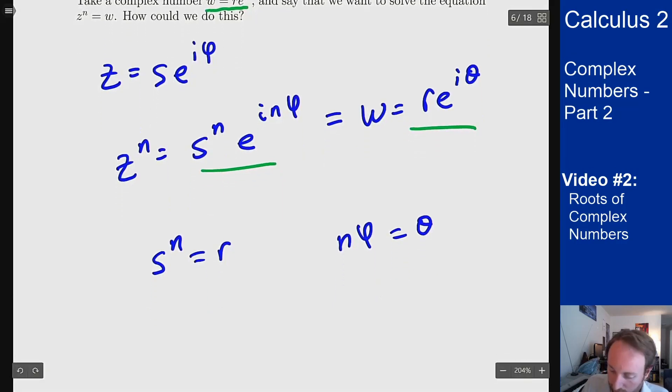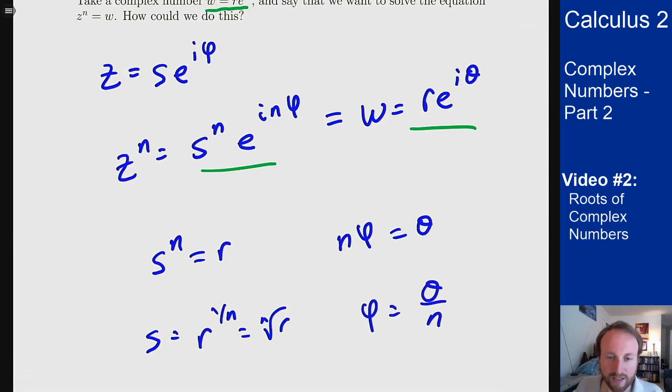These are both positive real numbers over here so I can take an nth root and over here I just divide both sides by n. So I must have that s is r to the 1 over n or the nth root of r and I must have that phi is theta over n. So what do I get?